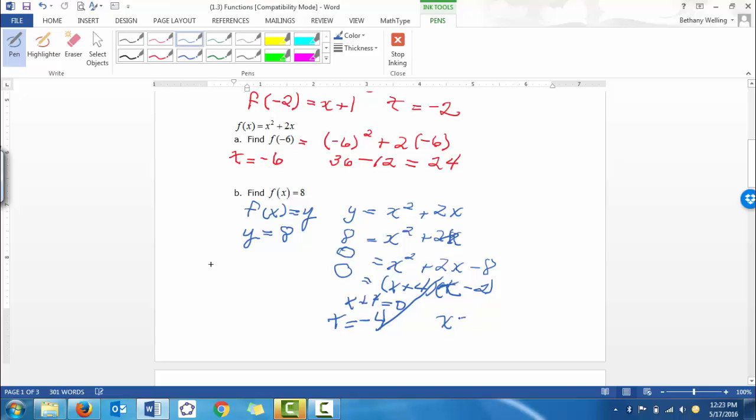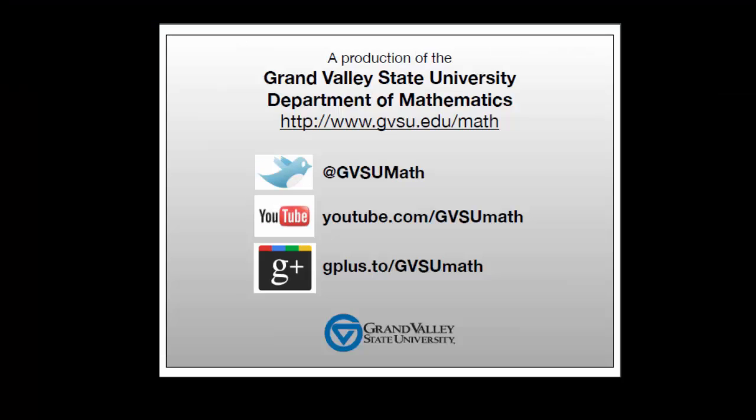And x minus 2 equals 0. So x is equal to positive 2. And now we know what the x is when y is 8.